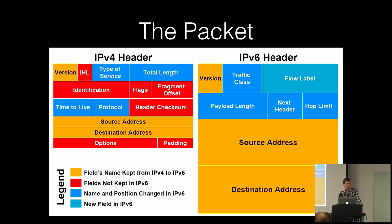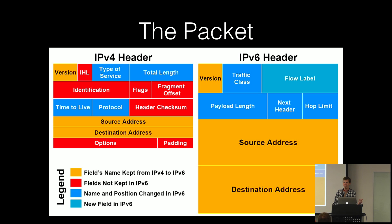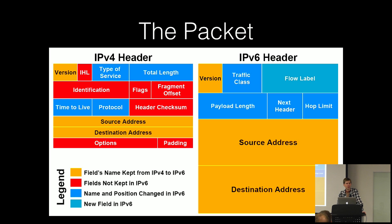The protocol header at layer three — just like layer two had a protocol header indicating what layer 3 protocol was in use — indicates what layer 4 protocol you're using. Codes in there include TCP, ICMP, IGMP, UDP, OSPF, and all sorts of other alphabet soup protocols.